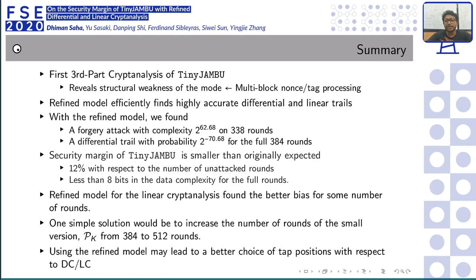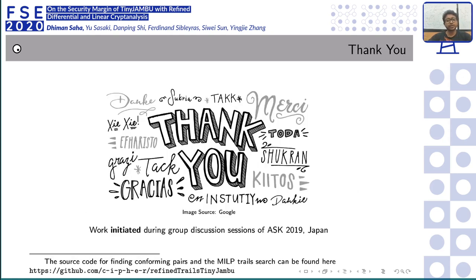Possible solutions include increasing the number of rounds from 384 to 512, though this would impact throughput. Alternatively, using the refined model to choose better tap points and tune parameters could improve the bounds. All details, including confirming pairs and trails, are available in the GitHub repository. Thank you all for listening, and I look forward to the live Q&A session.